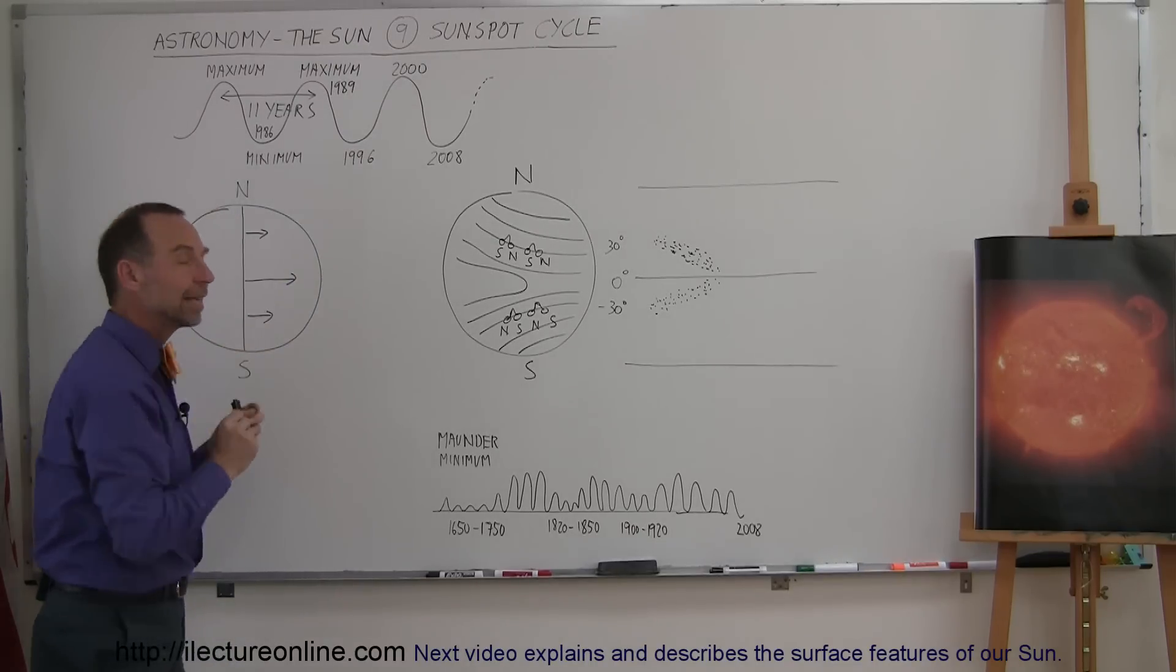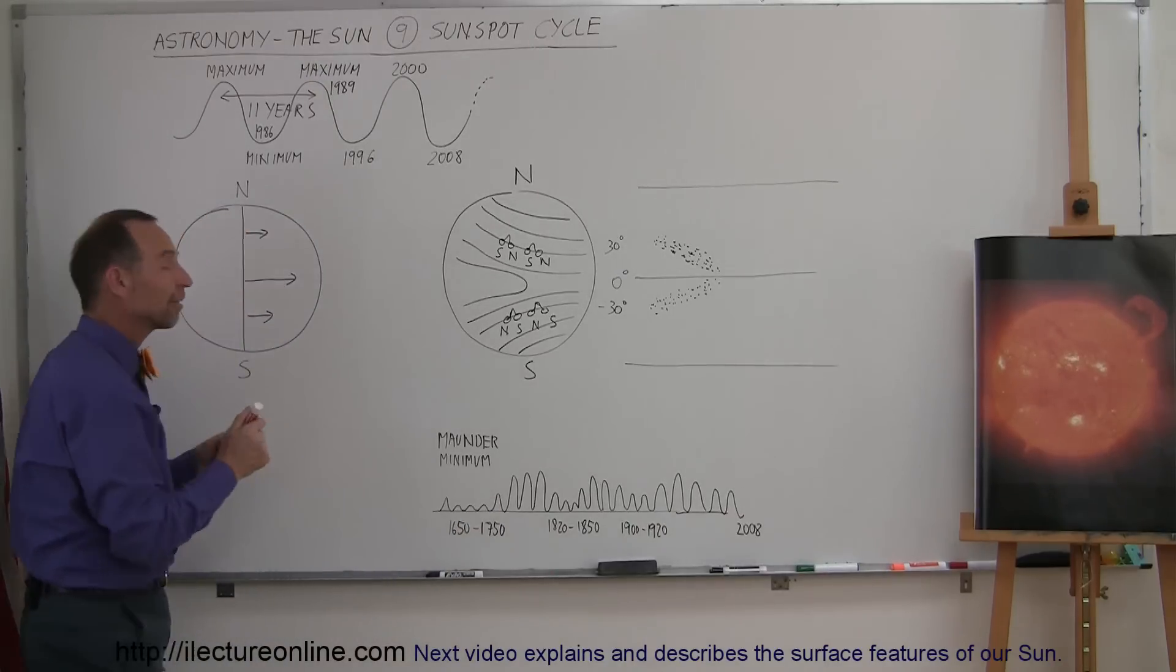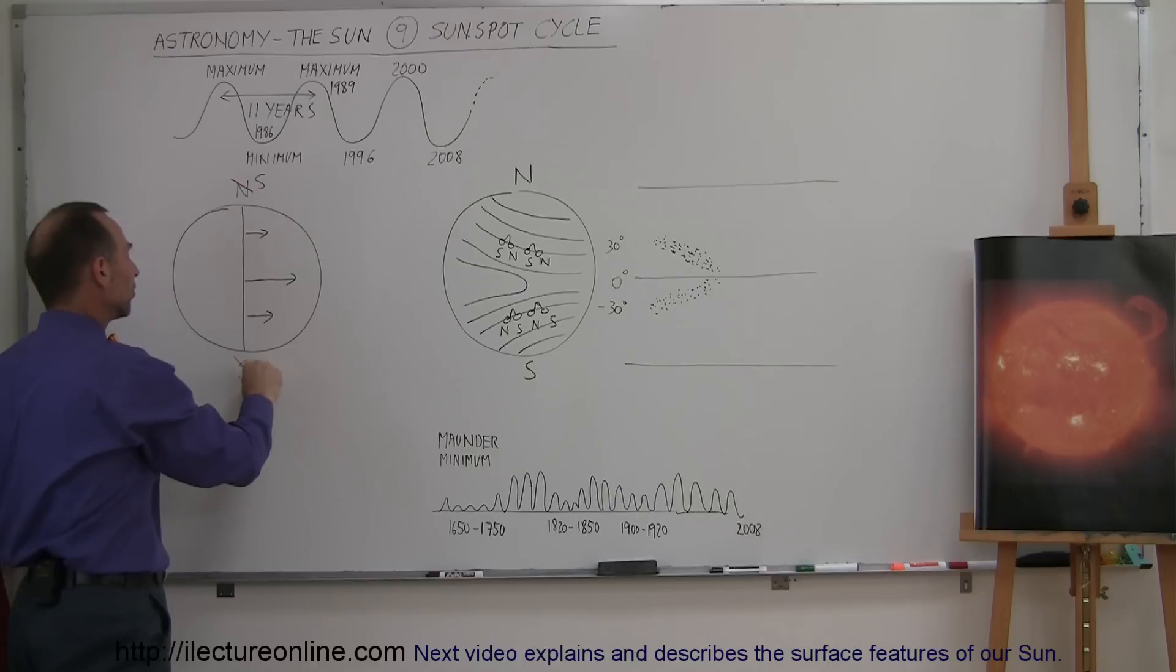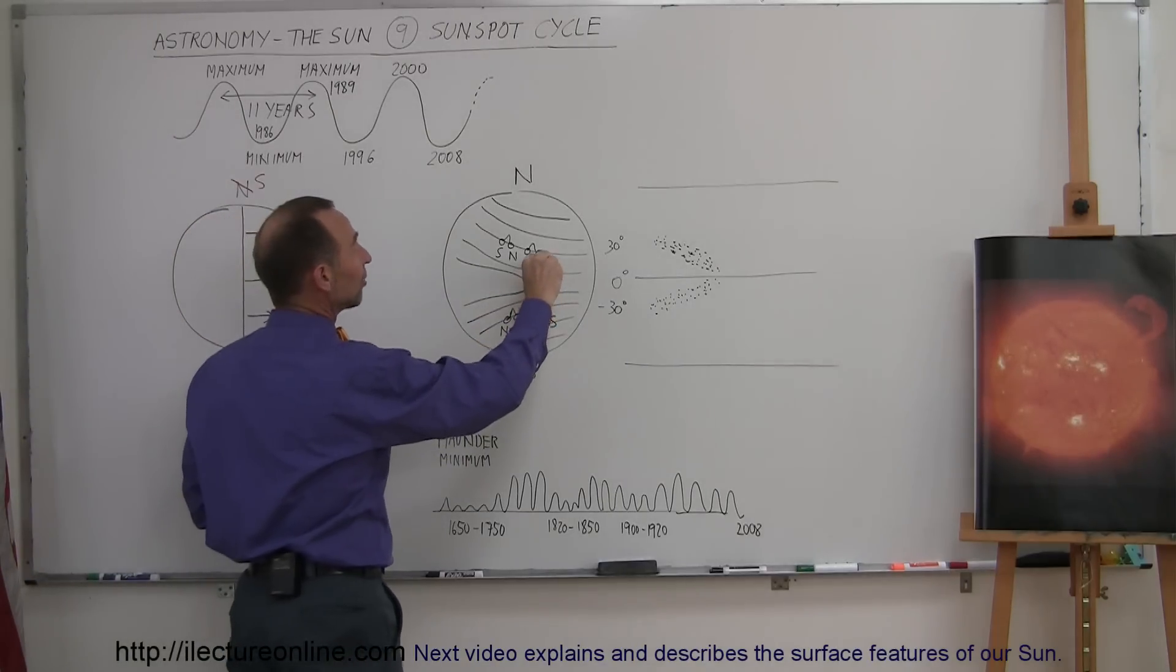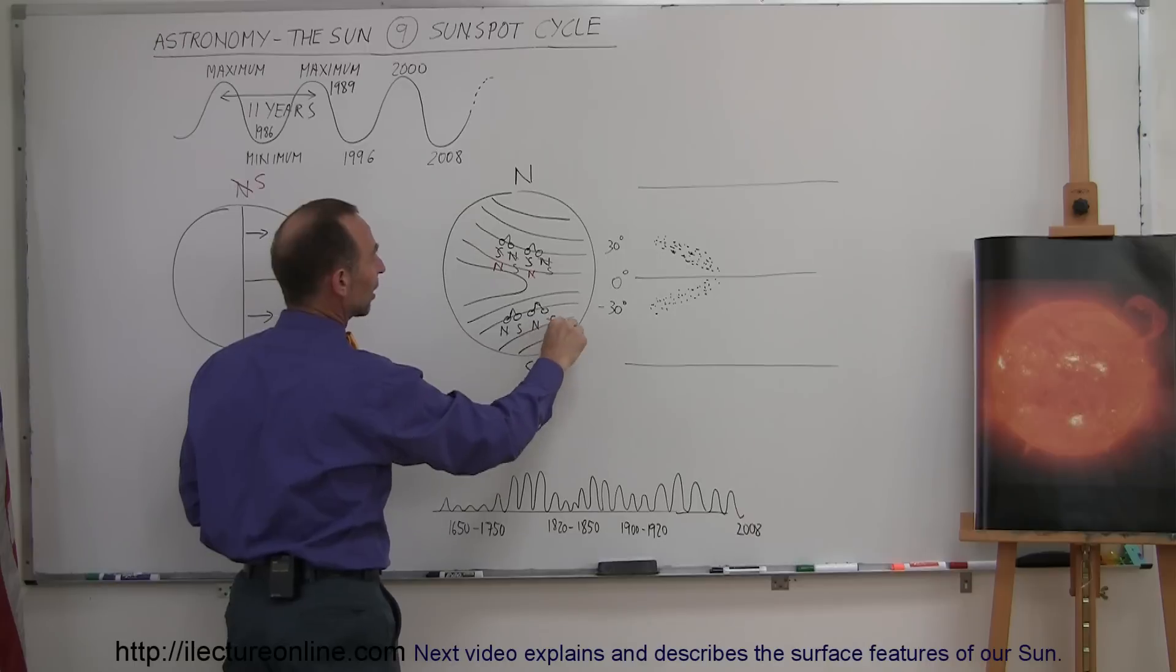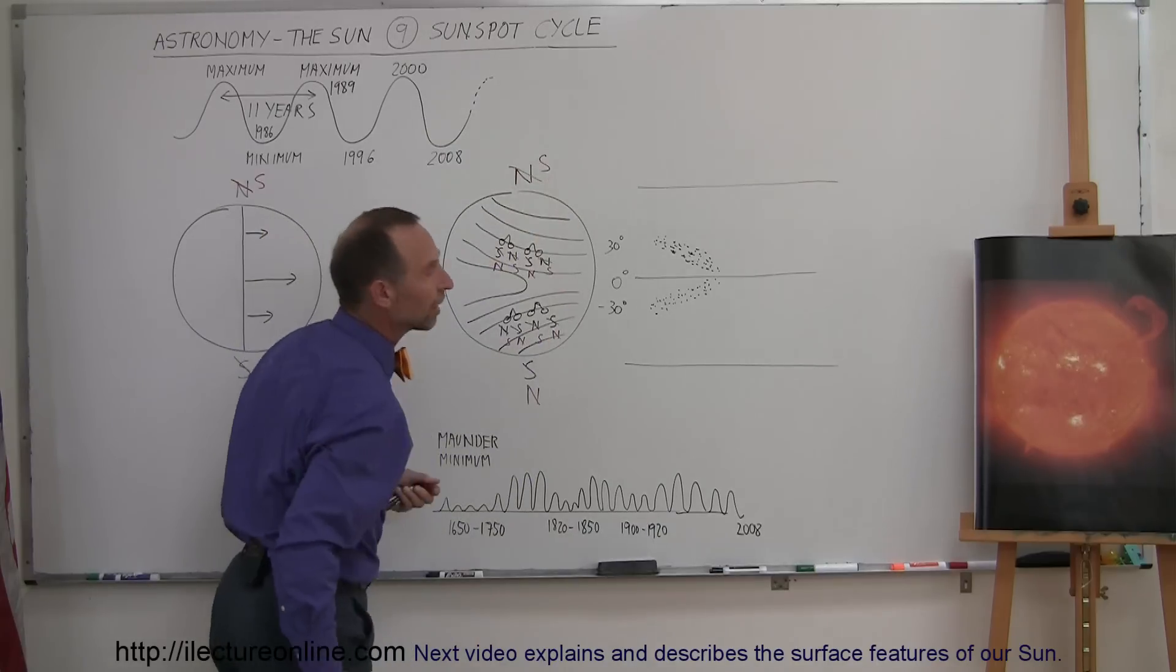But the only difference is that 11 years later, when the magnetic field resets itself, then the magnetic south pole is now at the north and the magnetic north pole is now at the south. And so when the new sunspots begin to appear, the orientation then changes. This will be south and north for the leading to the trailing sunspots. And on the south hemisphere, it will be north-south instead of south-north. So this becomes the magnetic north pole and this becomes the magnetic south pole.